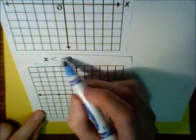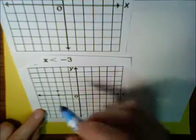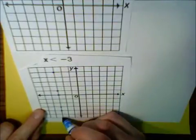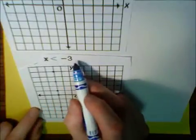And again, the y-value is not specified. So, the y-value can be anything. So, I could put a point here, here, here. I could put any of these points. Any of these points are all in the line.